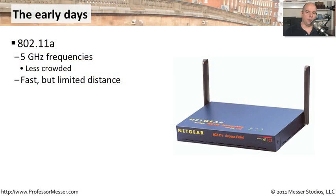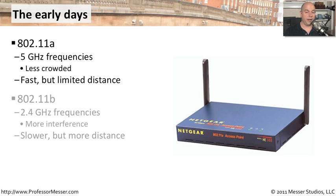In the early days of wireless networks, we didn't have to worry too much about compatibility, because there were only two standards, and those two standards were very, very different. On one hand, you had 802.11a, which used five gigahertz frequencies, but it had a limited distance in most environments. On the other hand, you had 802.11b, a completely different set of frequencies — 2.4 gigahertz — so there was more interference to deal with, and it was slower, but you could go much farther with the distances.